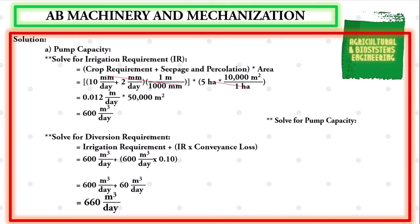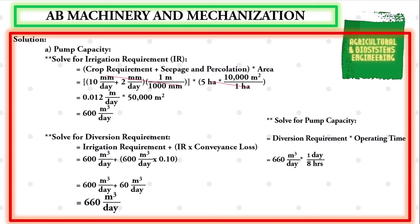We can now solve for the pump capacity. The formula is: pump capacity = diversion requirement ÷ operating time. Substituting: 660 m³/day ÷ 8 hours/day, giving us a final value for pump capacity of 82.5 cubic meters per hour.